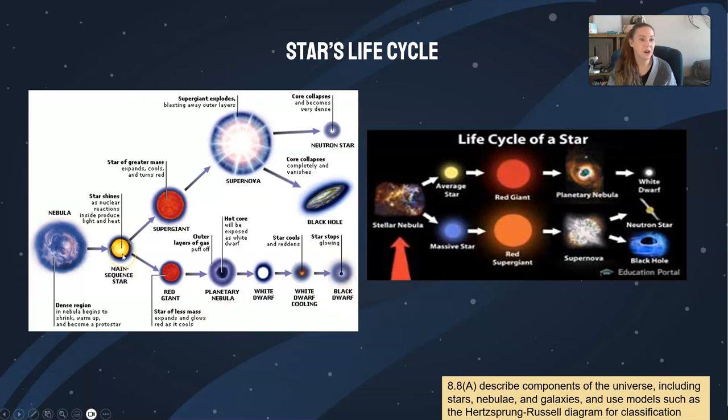Now, stars that are about three times as big as our sun, so we're talking three solar masses, that is three times as big as our sun, they're not going to become a red giant. They're going to become a super giant. And they're going to use up their hydrogen gas much quicker. So they're not going to last nearly as long on the main sequence as stars that are twice as big as our sun and smaller, simply because they're so big they're going to use up that hydrogen gas a lot quicker. And then they're going to leave being a super giant.